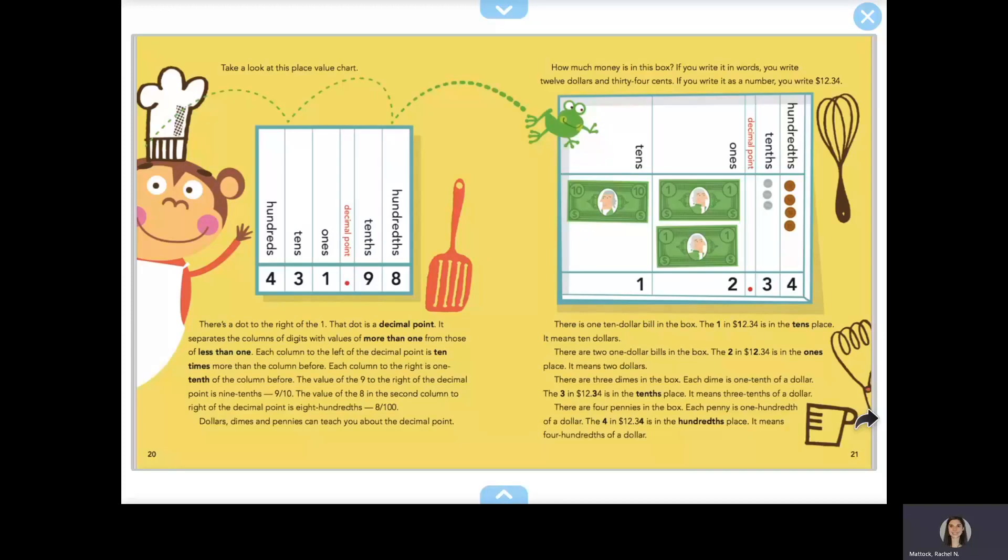There are three dimes in the box. Each dime is one tenth of a dollar. The three in $12.34 is in the tenths place. It means three tenths of a dollar. There are four pennies in the box. Each penny is one hundredth of a dollar.